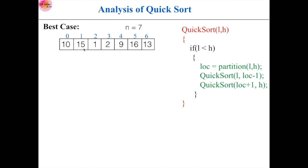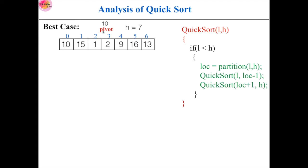Now let us consider this array having seven elements, so n is 7. Suppose if I call this quicksort function by passing the index of the first and last element — that is, passing 0 and 6 — then this partition algorithm will take the first element as a pivot element. This pivot element can be selected in four ways: the first element, the last element, any random element, or the median element.